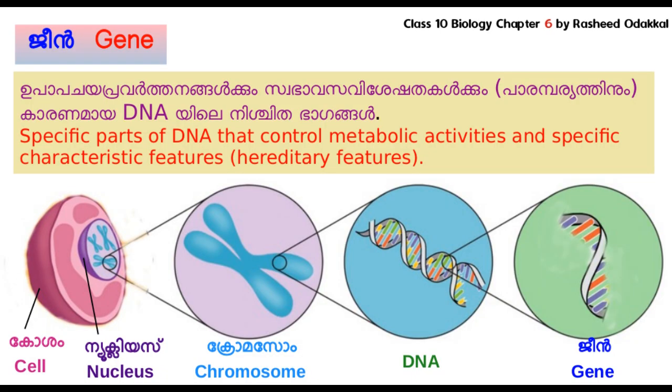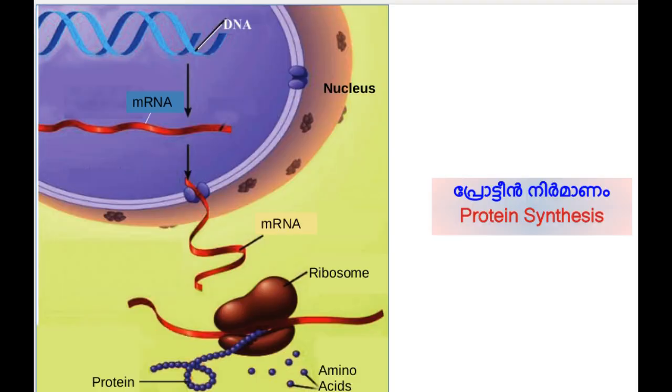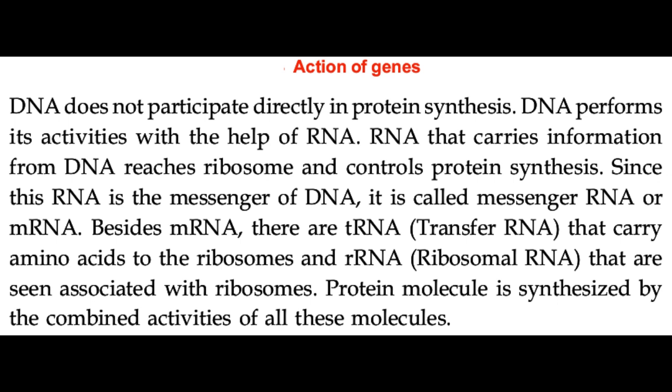The specific parts of DNA contain information for protein synthesis, and these nucleotides are known as genes. Proteins are formed in the ribosomes seen in the cytoplasm. Different kinds of RNA — mRNA, tRNA, and rRNA — are involved in this process. mRNA, which carries information from DNA, forms from DNA and reaches ribosomes. Based on the information in the mRNA, tRNA brings different kinds of amino acids to ribosomes. Ribosomes bind amino acids to form protein molecules. rRNA, or ribosomal RNA, is seen associated with ribosomes.